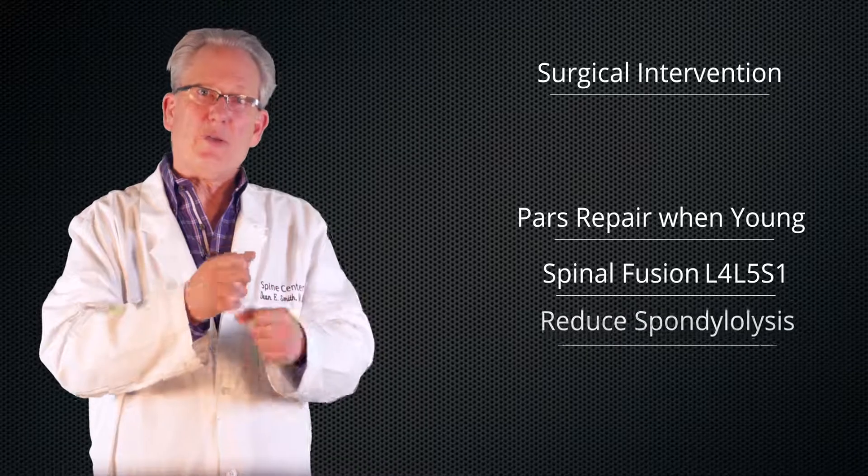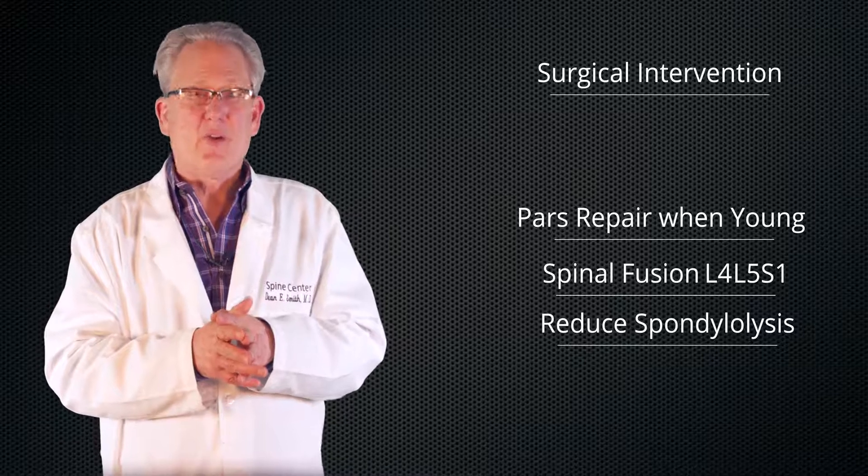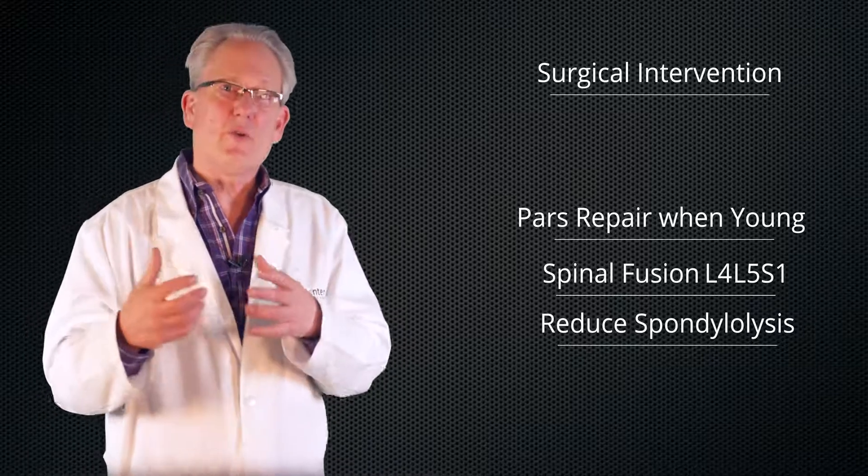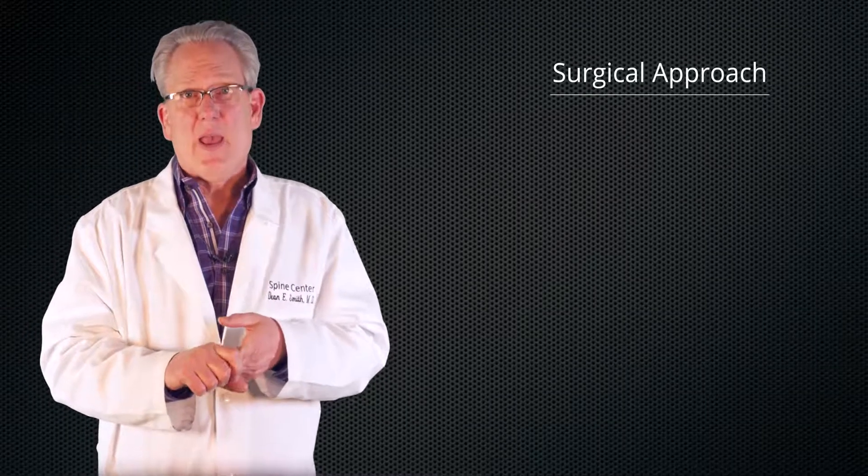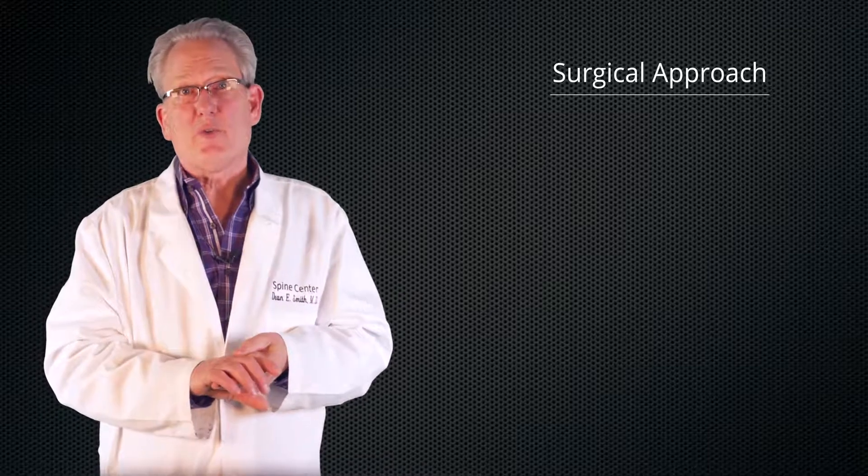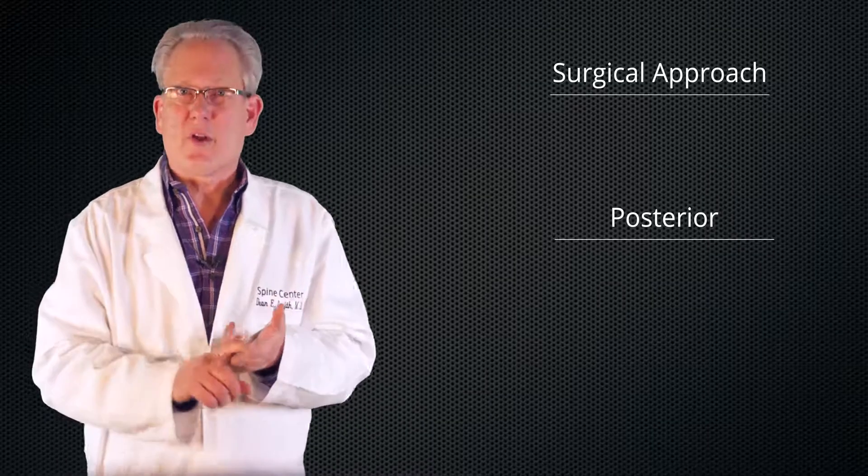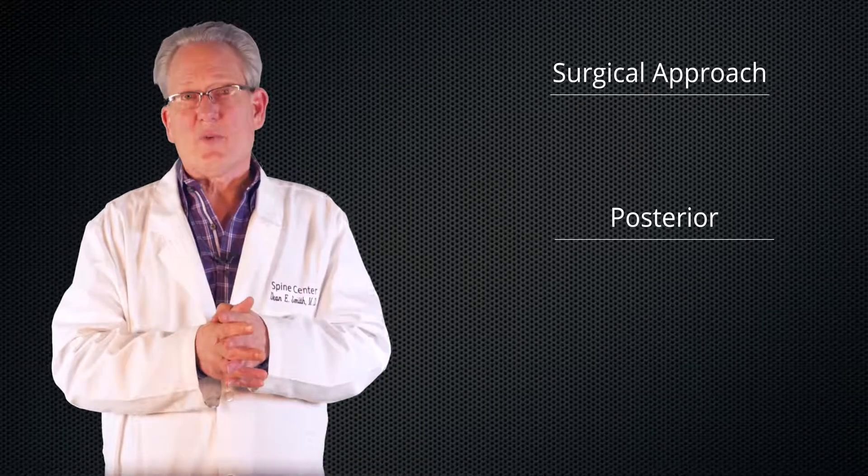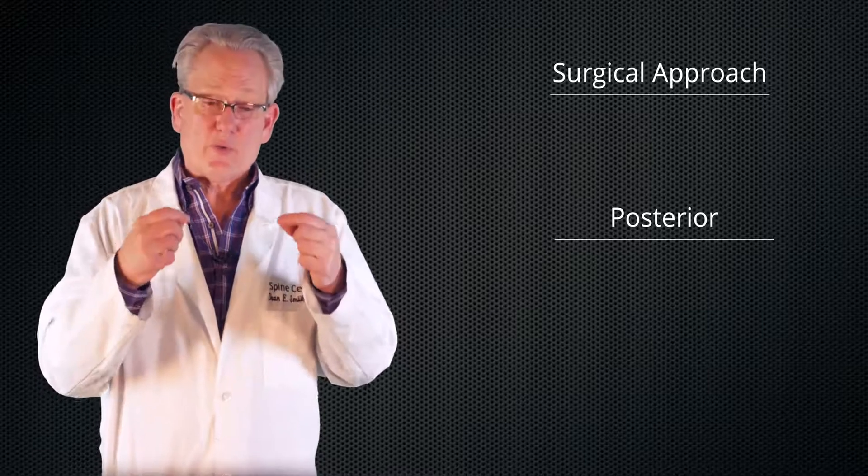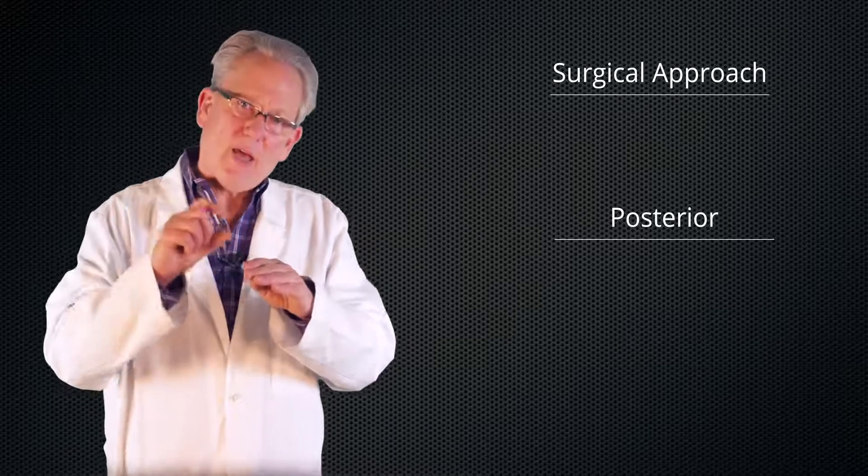Another decision is do we reduce the spondylolisthesis? Sometimes we do, sometimes we don't. One of the problems with reducing it is you could develop problems with the L5 nerve. Once you've decided what you're going to fix, then you have to decide upon the approach. The most common approach used is the posterior approach. It's the one that most surgeons know they're most comfortable with. It's the one they do most often. It has the advantage of giving you direct visualization of the nerves. You can put screws in the bones and reduce the vertebral bodies, get good overall alignment, and you can put cages in the disc space.